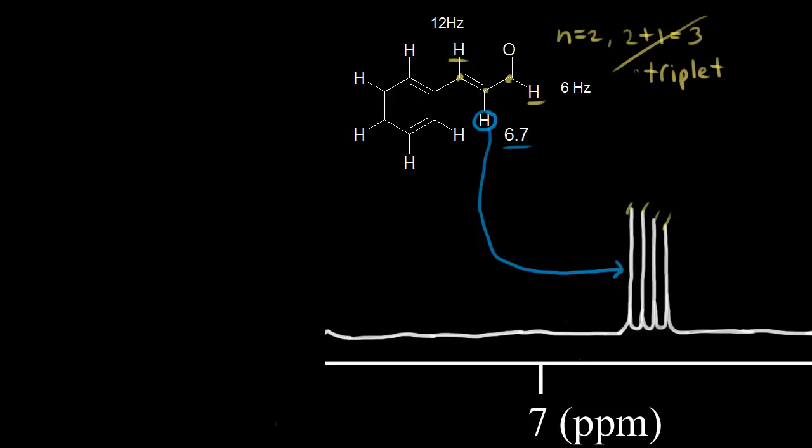The n+1 rule doesn't work in this case because the n+1 rule applies when the neighboring protons are equivalent. Here, the two neighboring protons are not equivalent. So we need a new way to explain the signal for the blue proton, and we're going to use what's called a splitting tree.